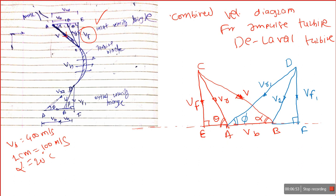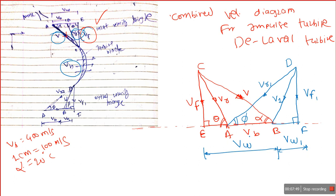This is the absolute velocity at outlet — I use the suffix '1' for outlet quantities. Some books use suffix 'i' for inlet and 'o' for outlet, but these are our notations. The two remaining terms are the whirl velocities. The distance BE indicates the whirl velocity at inlet, and the distance BF indicates the whirl velocity at outlet.